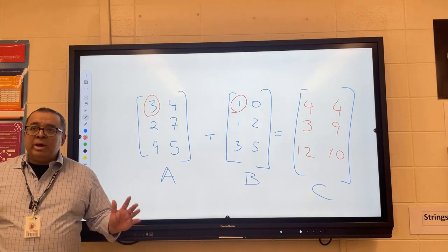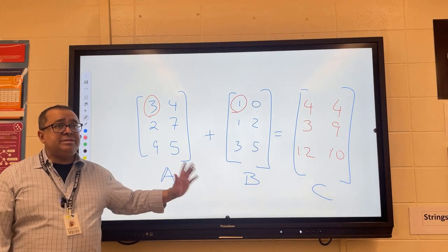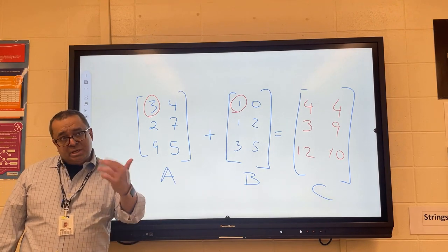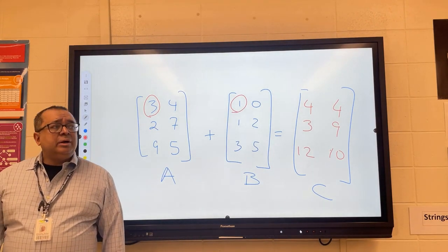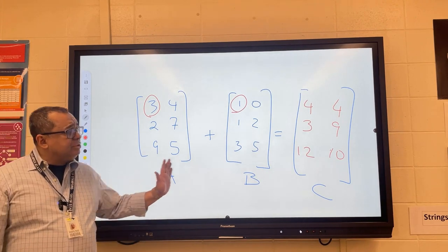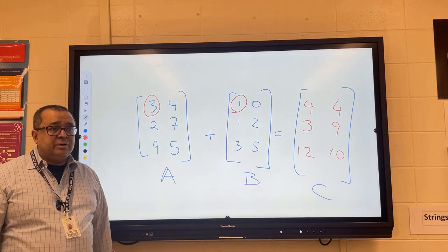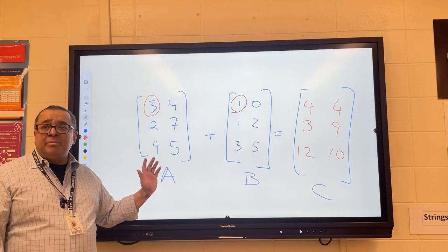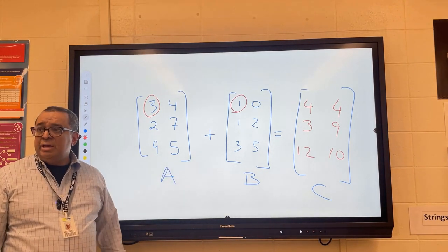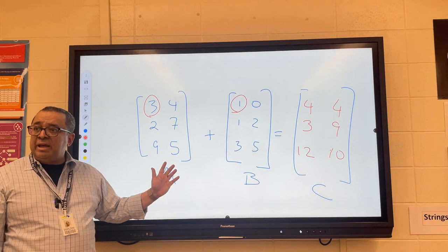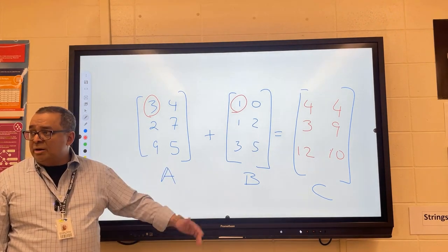Question: what has to be true about the dimensions of the two arrays if we want to add them together? Mr. Baker — they have to have the same number of rows and columns. Correct. If the number of rows is different, you can't add them. If the number of columns is different, you can't add them.